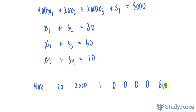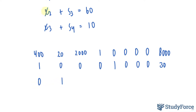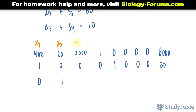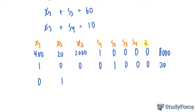The columns are labeled X sub 1, X sub 2, X sub 3, S sub 1 through S sub 4, Z, and the constant. For the budget constraint row: 400, 20, 2,000, 1, 0, 0, 0, 0, and 8,000. For the newspaper constraint: 1, 0, 0, 0, 1, 0, 0, 0, and 30. For the internet constraint: 0, 1, 0, 0, 0, 1, 0, 0, and 60.